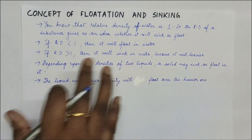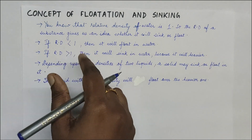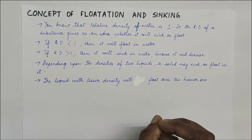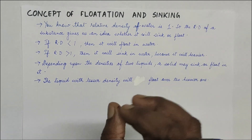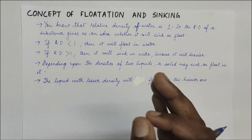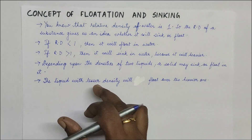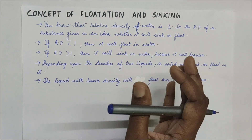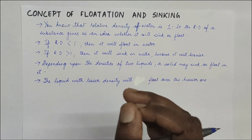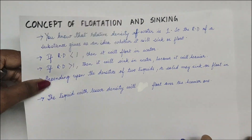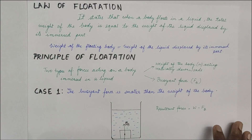If the RD is more than 1, it will sink in water because it is heavier. Depending on the densities of liquids, if we have two different liquids and take the same solid, it may sink in one or float in the other — it all depends on the mass, volume, and density formula. The liquid with lesser density will float over the heavier one. A very common example is oil and water — oil is less dense and floats over water. You can try that at home yourself.